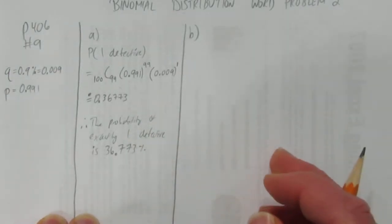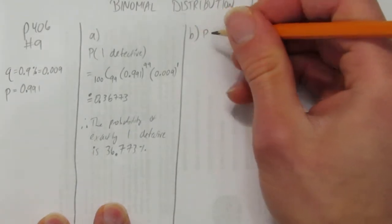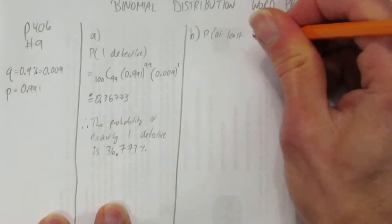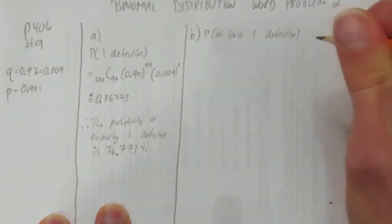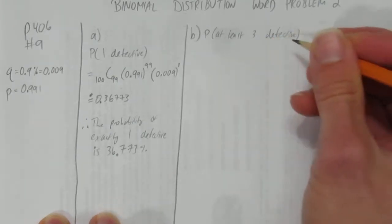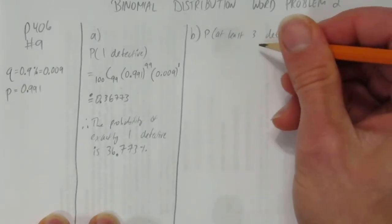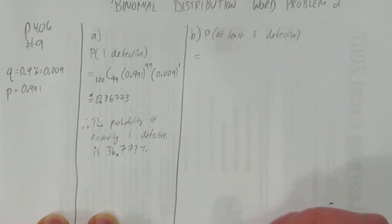It says, what's the probability that at least 3 are defective? The key is in that word 'least'. Probability at least 3 defective. Well, we're testing 100 chips. If we wanted to do at least 3 defective, we could do it straight up by going, okay, that could be 3 defective, or 4 defective, or 5 defective, or 6 defective, or 7 defective, all the way up to 100. That's a lot of calculations.